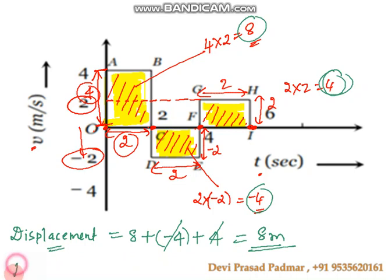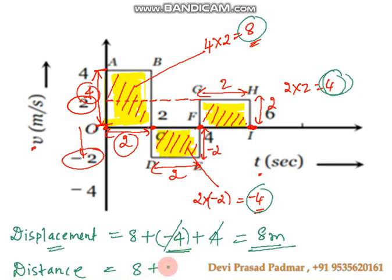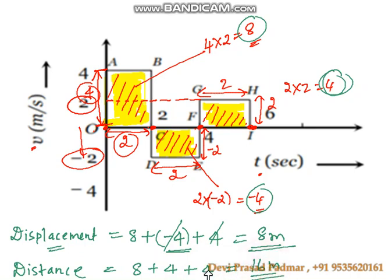Now we calculate distance. For distance, we consider only the magnitude, so instead of minus 4 we use plus 4. Adding 8 plus 4 plus 4 gives us 16. So the distance is 16 metres. The final answers are: displacement is 8 metres and distance is 16 metres.